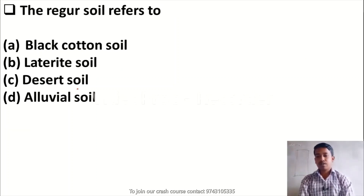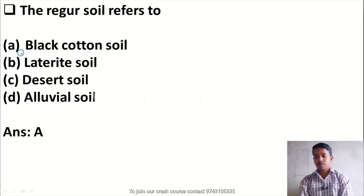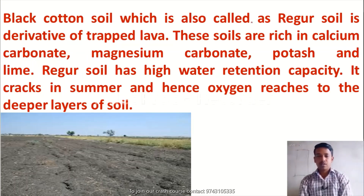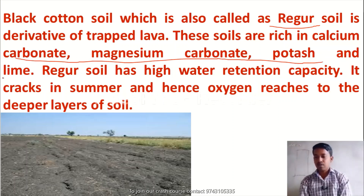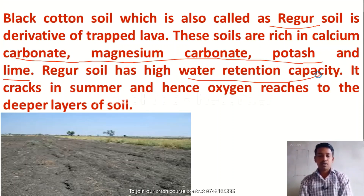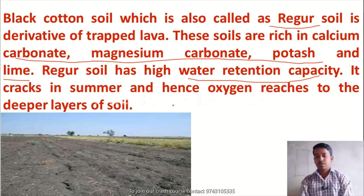The next question: the rager soil is referred to — Option A, black cotton soil; Option B, laterite soil; Option C, desert soil; Option D, alluvial soil. Rager soil is known as black cotton soil. These soils are rich in calcium carbonate, magnesium carbonate, potassium, and lime. Please remember: black cotton soil or rager soil are rich in calcium carbonate, magnesium carbonate, potassium, and lime. Rager soil has high water retention capacity. It cracks in summer and hence oxygen reaches to the deeper layer of soil.